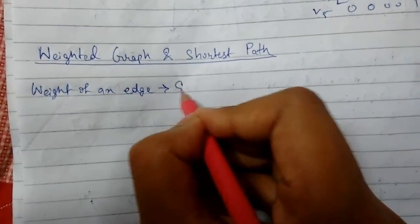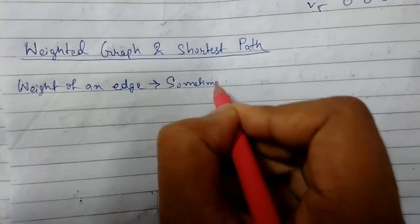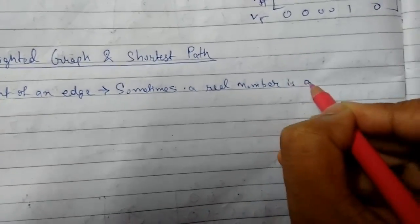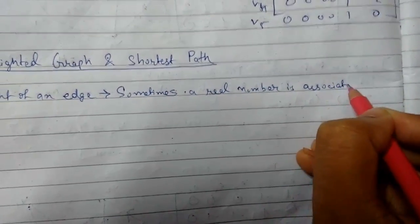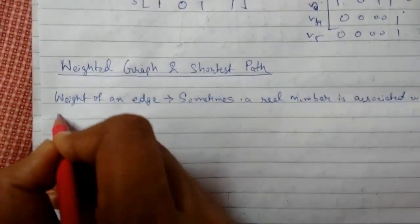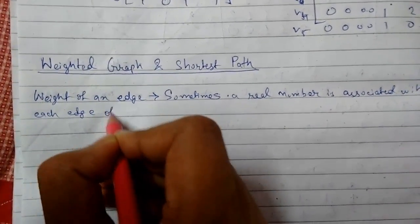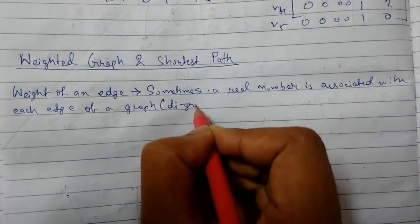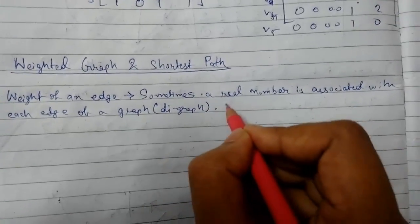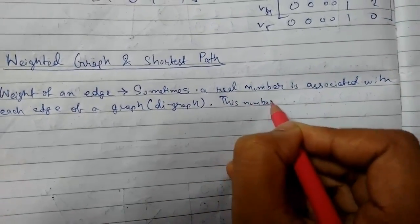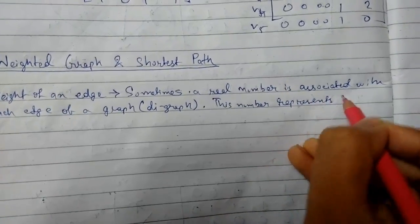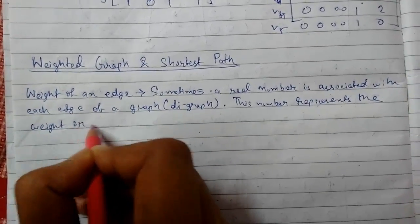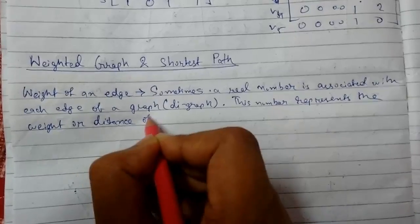We can see sometimes a real number is associated with each edge of a graph or directed graph. This number represents the weight or distance of that edge.